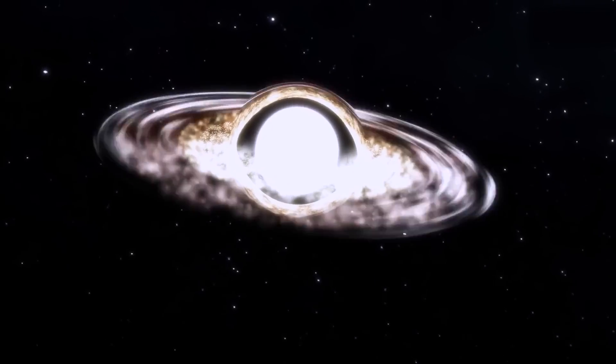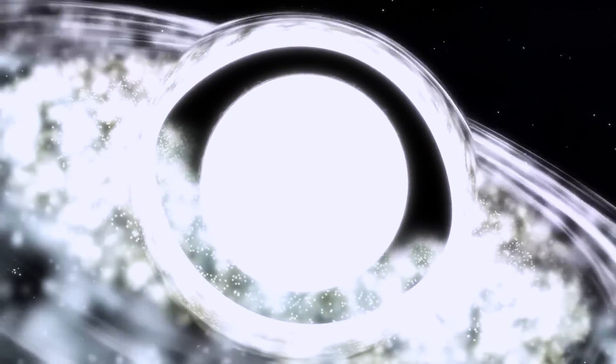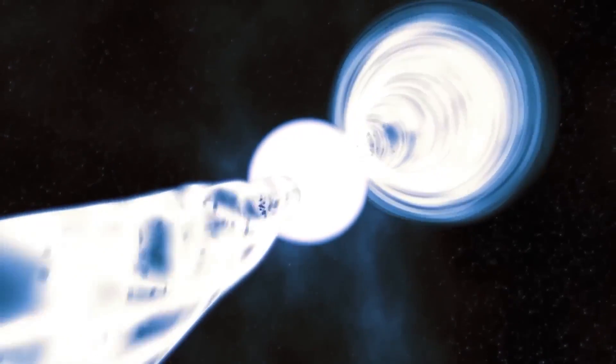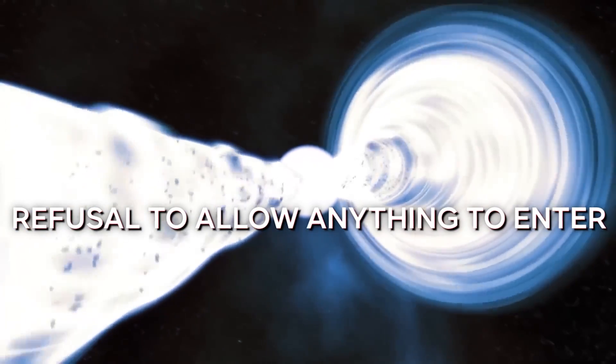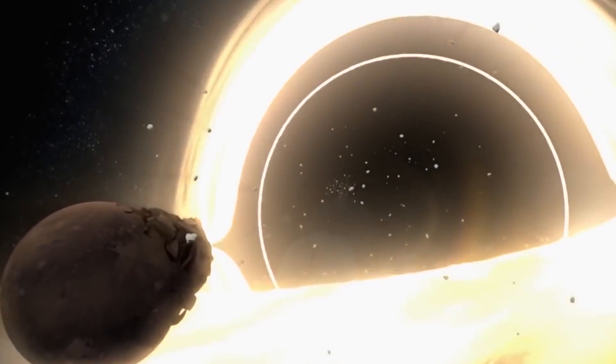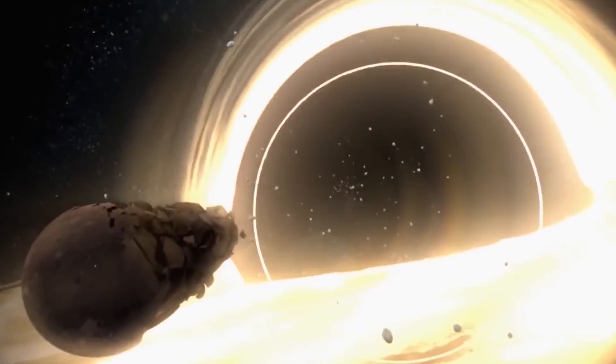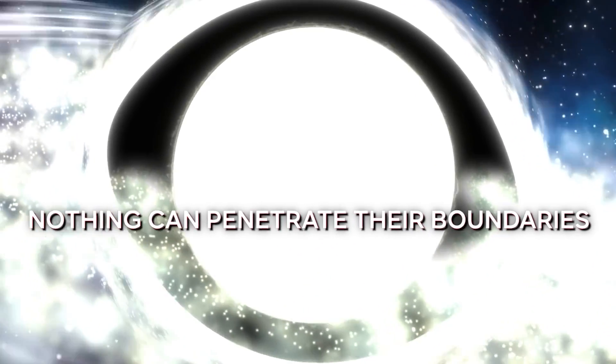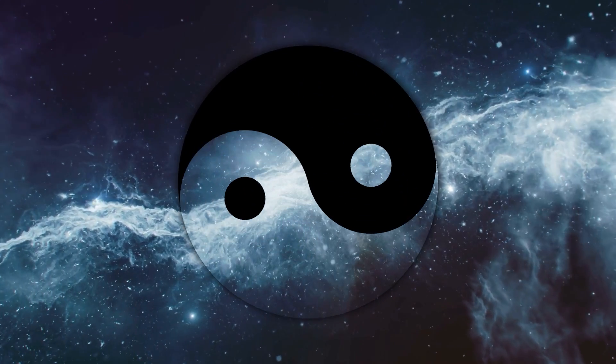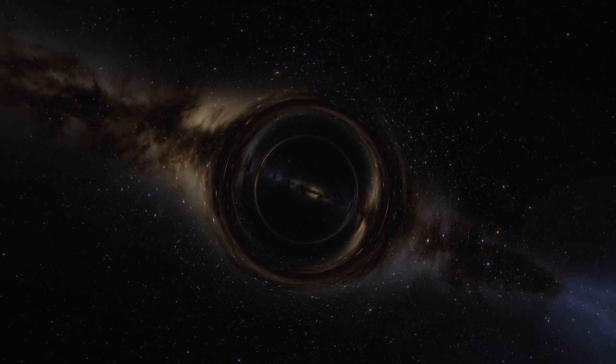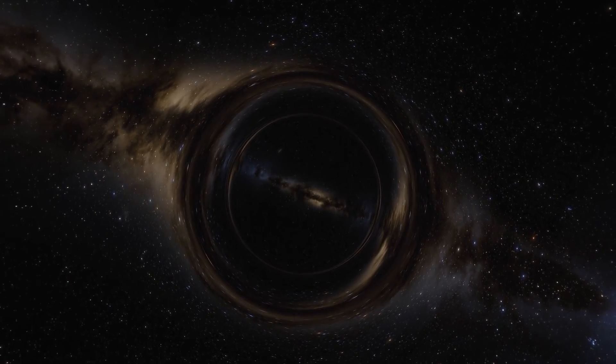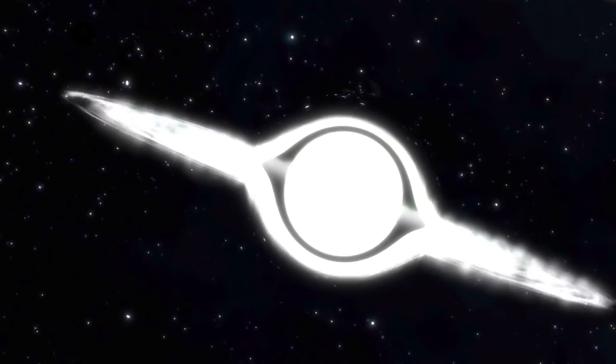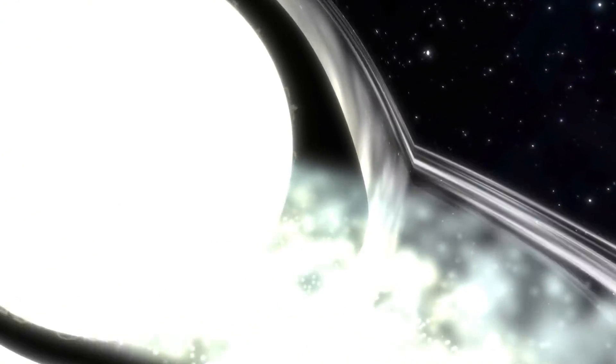Now let us turn our attention to the enigmatic white holes, the antithesis of black holes. These cosmic enigmas are characterized by their utter refusal to allow anything to enter. While black holes devour all that crosses their path, white holes exhibit an opposite behavior. Nothing can penetrate their boundaries. Think of it as a colossal cosmic yin and yang, or more practically, while a black hole's event horizon represents a point of no return, a white hole's event horizon is a point of no admittance.